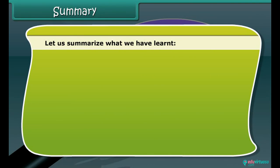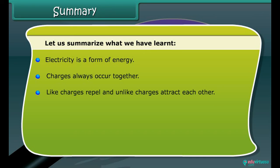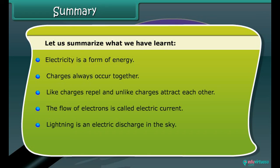Let us summarize what we have learned. Electricity is a form of energy. Charges always occur together. Like charges repel and unlike charges attract each other. The flow of electrons is called electric current. Lightning is an electric discharge in the sky.